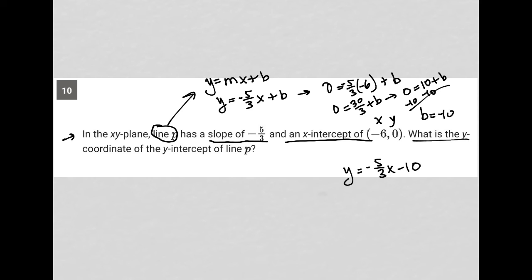The question goes on to say, what is the y-coordinate of the y-intercept of line P? Well, I know the y-intercept is negative 10. So that's my answer. That is also the y-coordinate.